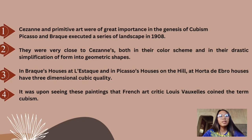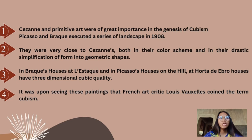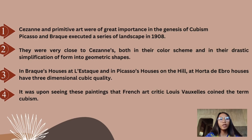Cézanne and primitive art were of great importance in the genesis of Cubism. Picasso and Braque executed a series of landscapes in 1908 that were very close to Cézanne in both their color schemes and their drastic simplification of form into geometric shapes. In Braque's 'House at L'Estaque' and Picasso's 'House on the Hill at Horta de Ebro,' the houses have a three-dimensional cubic quality. It was upon seeing these paintings that French art critic Louis Vauxcelles coined the term Cubism.